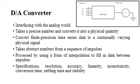Generally, an ideal DA Converter takes abstract numbers from a sequence of impulses that are then processed by using a form of interpolation to fill in data between impulses. A conventional DA Converter puts the numbers into a piecewise constraint function made up of a sequence of rectangular functions that are modeled with the zero order hold.